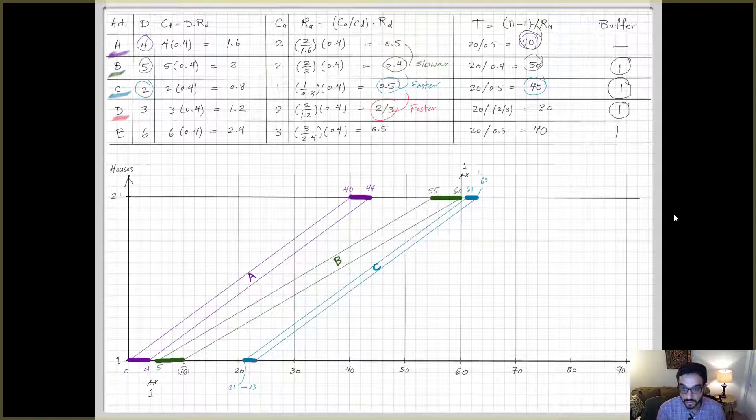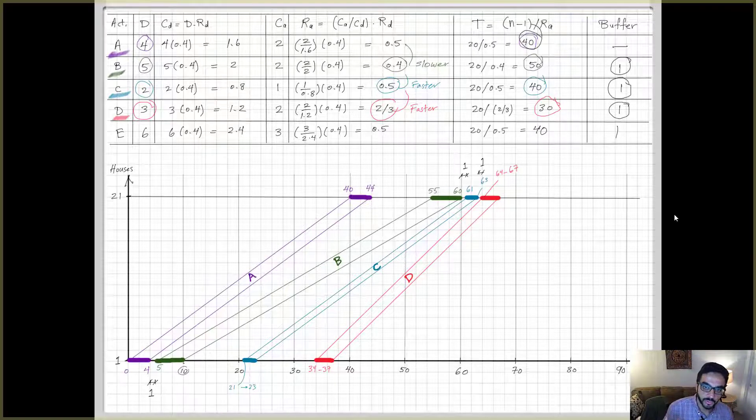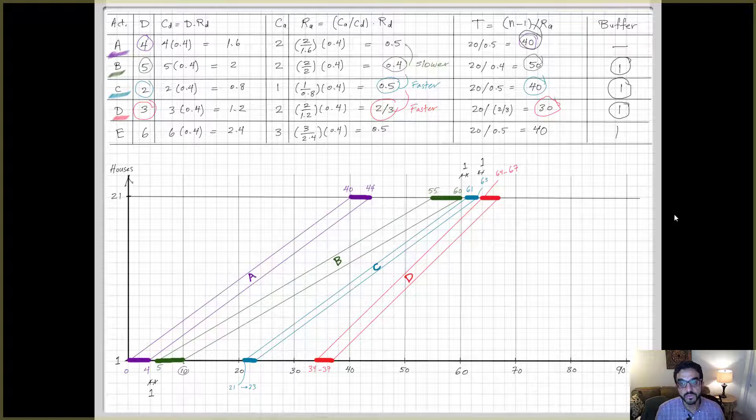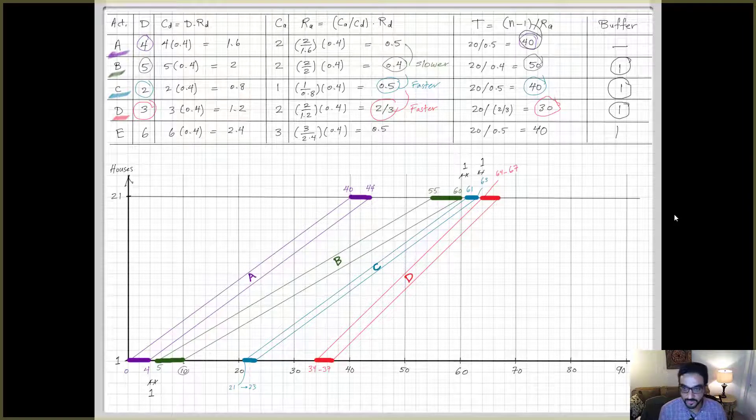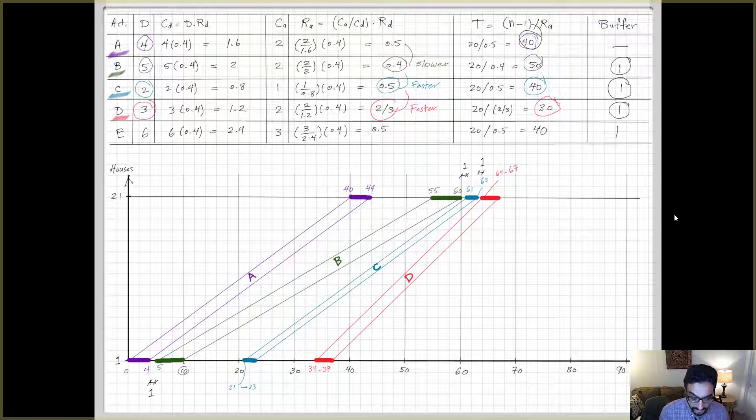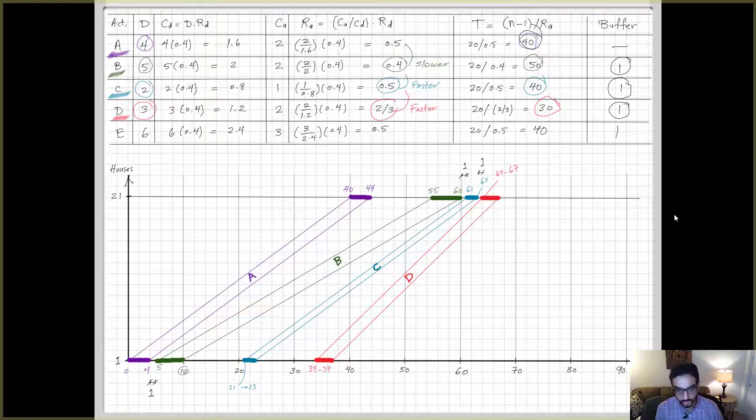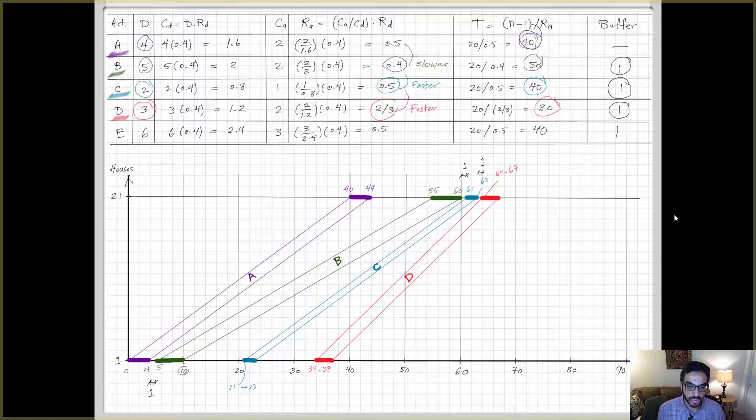Next would be D. You got the trick here. Compare the productivity rate, so you'll find that 2 over 3 is 0.667, faster than 0.5. So I'm hitting again at the top. Draw the one unit, one day buffer. 63 is the end of C, so the start of D at the last unit is 64 with a duration of 3, so it ends at 67. Considering that T here is equal to 30, you go backward with the difference of 30 backward in time. So the first unit for activity D here, the work starts at 34 and ends at 37. Draw the two lines, the bounding lines for activity D, and you're done with activity.